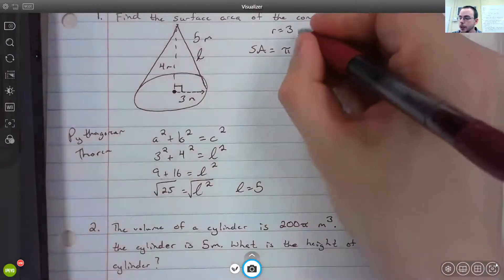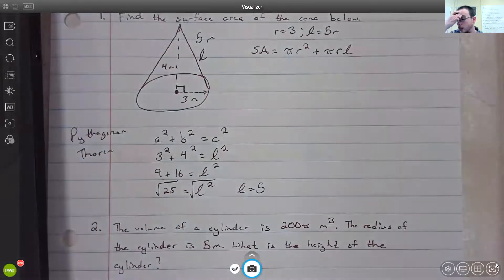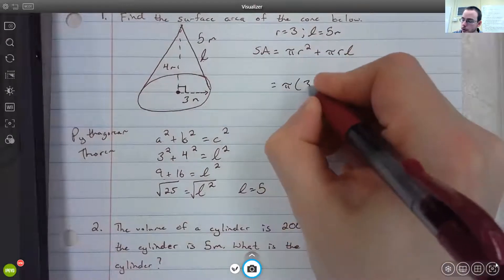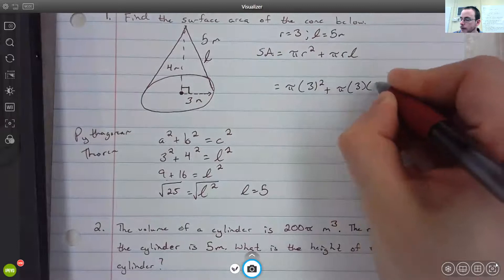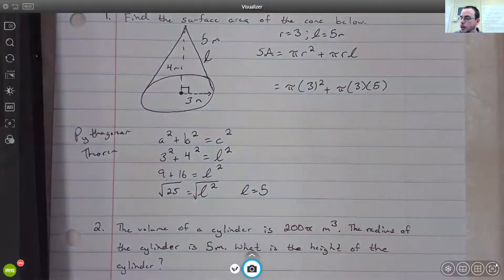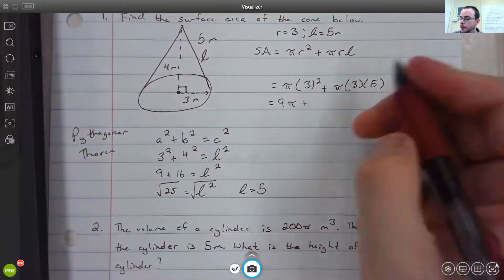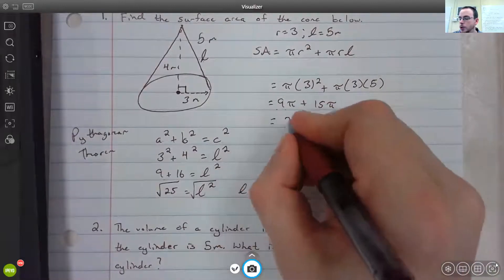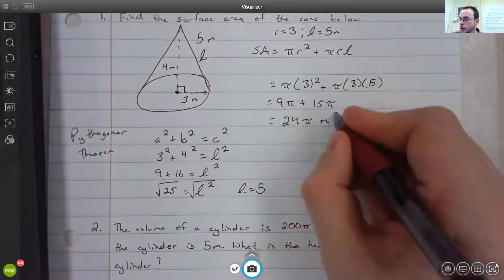Now we know what the radius is, we also know what our slant length is, and now we just plug those in. So we get π times 3² plus π times 3 times 5. 3² is 9, 3 times 5 is 15. 9π plus 15π gives us 24π meters squared.